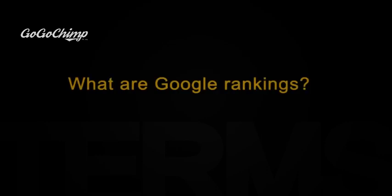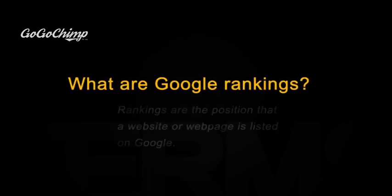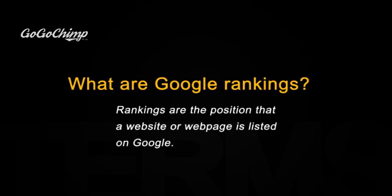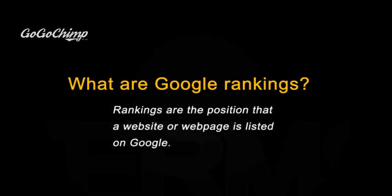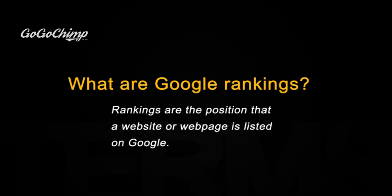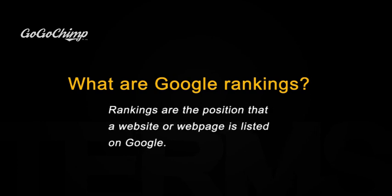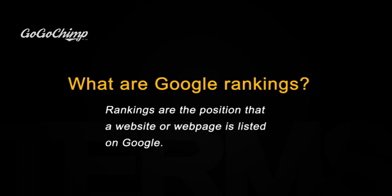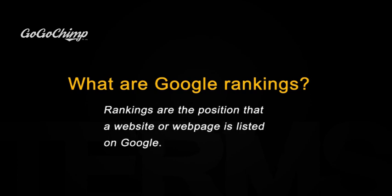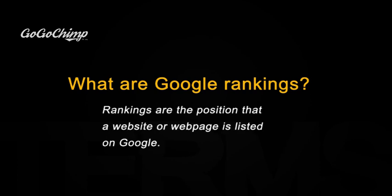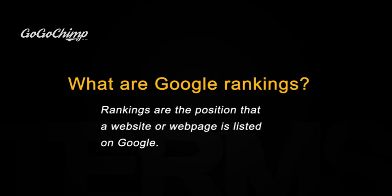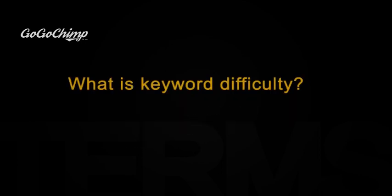Next up we've got rankings. Simply put, rankings are the position that you're listed in Google. If you have a top ranking you might be in first or second place, while a low ranking might be on page two or page three.